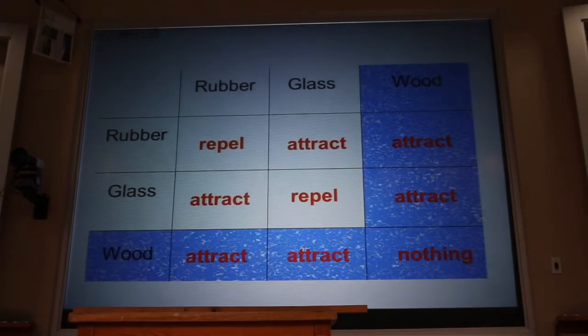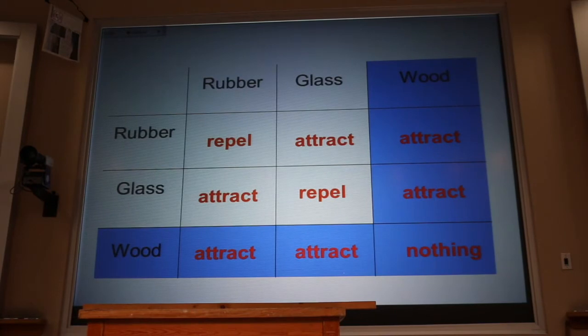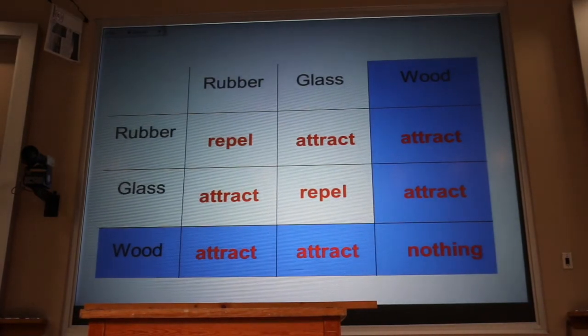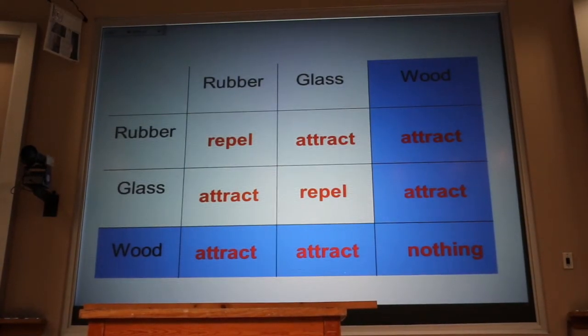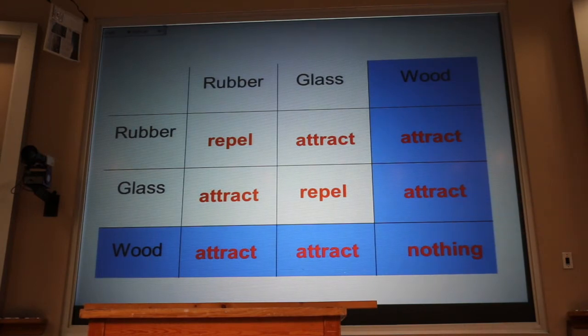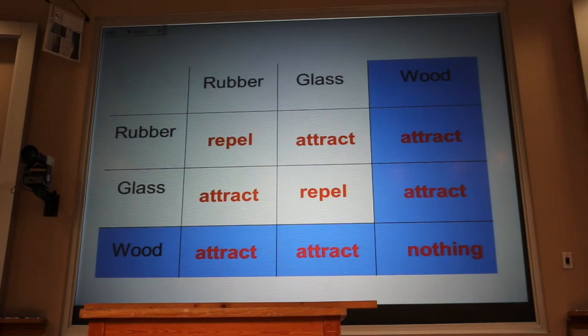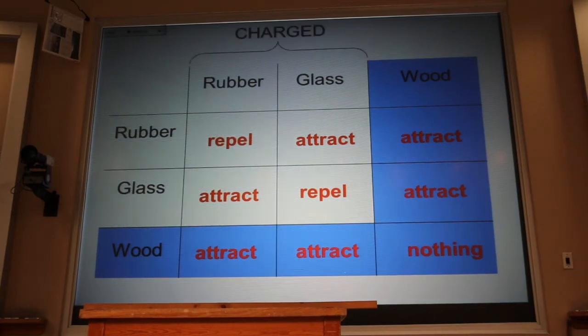We're going to discuss why that wood acts differently from the other two categories. We notice that the wood category acts differently. I can't find a repulsion with wood. And so we give names to these categories. We call the rubber and the glass charged, and we call the wood category neutral.